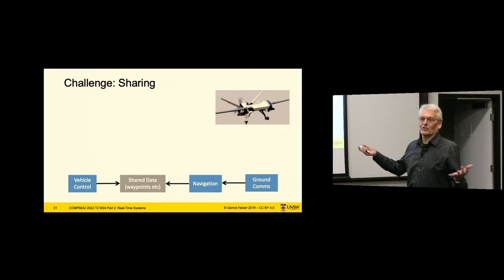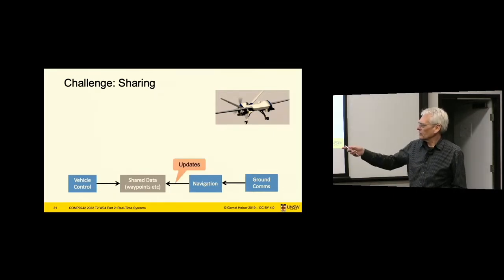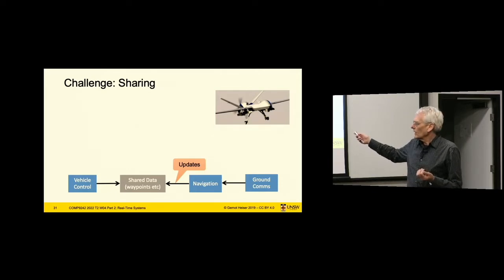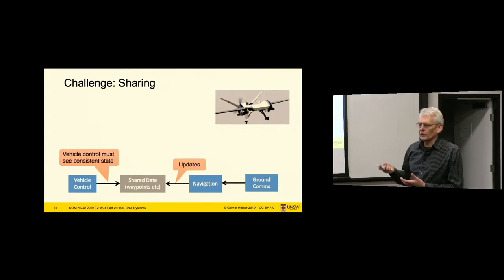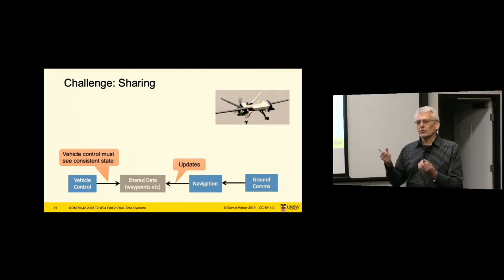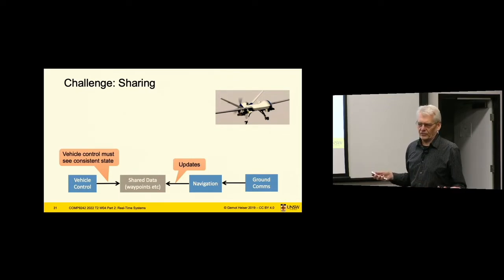This is actually already an example of a mixed-criticality system — ground control is of lesser criticality than vehicle control. The important point is that it updates shared data which needs to be accessed by the vehicle control. The vehicle control needs to see a consistent state of the shared data. The waypoints are a complex set of data, which means there's obviously a concurrency control issue. What's the core challenge about this concurrency control issue for real-time systems? It interferes with scheduling, because in the end some sort of concurrency control limits when things can run, and that introduces scheduling dependencies.